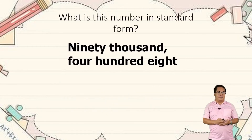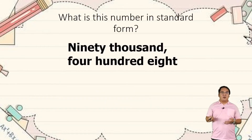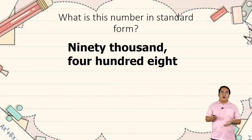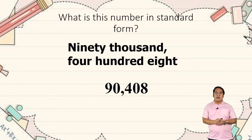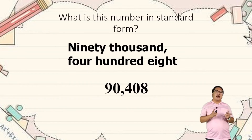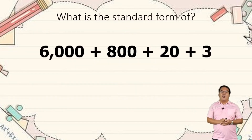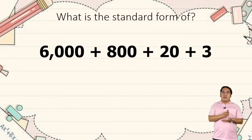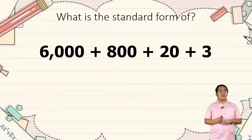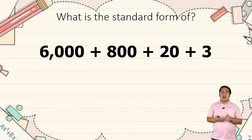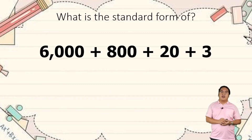How about this one? The standard form of ninety thousand four hundred and eight — we have 90,408. How about this one? Six thousand plus eight hundred plus twenty plus three — the standard form is 6,823. The standard form is combining numbers just like in the addition process.